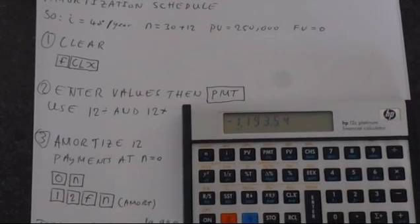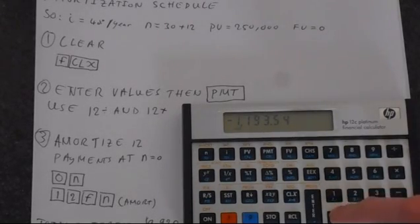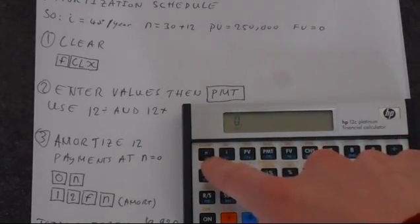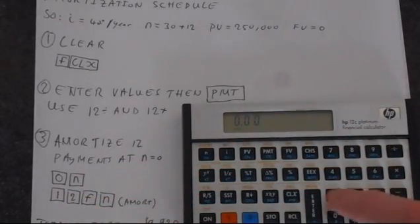Now we can do the amortization. So let's do the first one. So we're amortizing the payments at N equals 0, so put in 0, and then N, so we're overwriting that value. And then if we press 12, so it's 12 months.